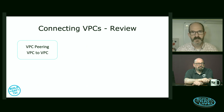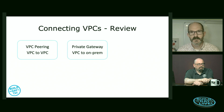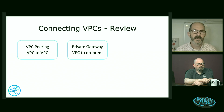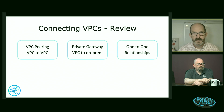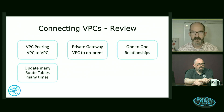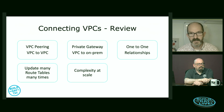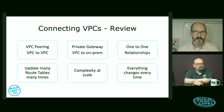We spent the last couple of episodes talking about connecting VPCs to things. We looked first at connecting VPCs to VPCs through VPC peering — that was two episodes ago. In the last episode, we looked at connecting a VPC to our on-premises network using a virtual private gateway. What we saw is that each of these was a one-to-one relationship, so every time we needed to add another VPC, we had to update route tables everywhere, every time — lots of complexity.